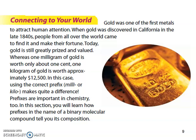Gold was one of the first metals to attract human attention. When gold was discovered in California in the 1840s, people came from all over the world to find it. Today, one milligram of gold is worth only about a cent, while one kilogram is worth about twelve thousand five hundred dollars. Using the correct prefix — milli or kilo — makes quite a difference, just as we saw with metric unit prefixes in chapter 3. Prefixes are important in chemistry too.